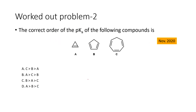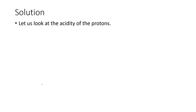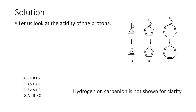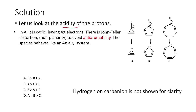In the second problem, we need to find the correct order of pKa for three given compounds A, B, and C, with four choices provided. To look at pKa, we have to look at the acidity of the compounds. The most acidic hydrogen atom must be lost — when it is removed by a base, we end up with the carbanion.